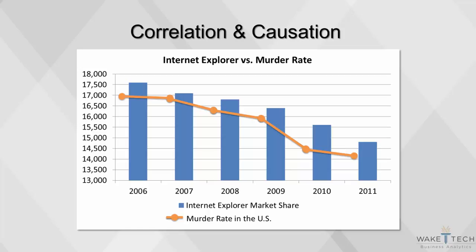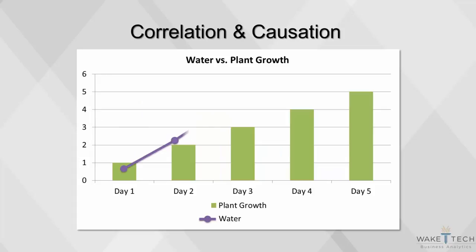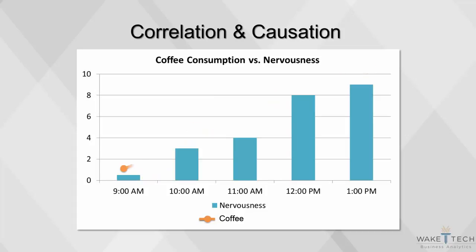First, you need to establish a logical relation and then find the correlation. Variables may be correlated if they have a causal relationship — for example, water causes plants to grow. Correlation can also occur when one variable is both the cause and the effect. For example, coffee consumption can cause nervousness, but it's possible that nervous people also drink more coffee.